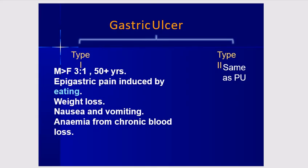Gastric ulcer is of two types. Type 1 is more common in males aged 50 and above, presenting with epigastric pain induced by eating, weight loss, nausea, vomiting, and anemia from chronic blood loss. Type 2 is similar to a peptic ulcer or duodenal ulcer in its presentation.